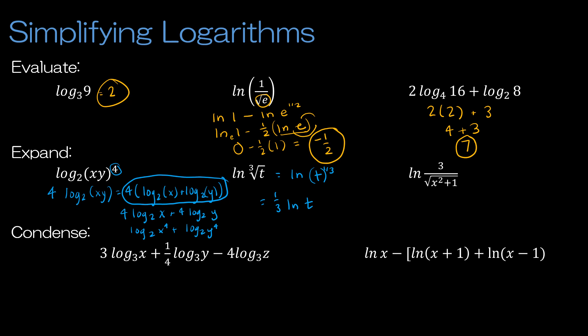Last expanding problem: natural log of a quotient containing a square root. I rewrite it as natural log of 3 minus one-half times natural log of (x squared plus 1). Before moving on, I want to point out a common mistake — the x squared inside the expression cannot be moved to the front using the power property, because it's not the entire expression being raised to the second power; it's just an element within the expression.